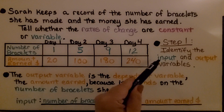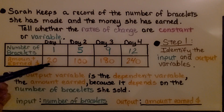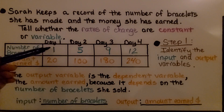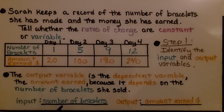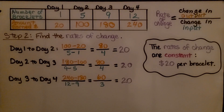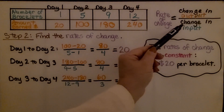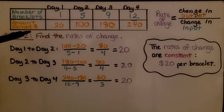The first thing we do is identify the input and output variables. The input is the number of bracelets she made — it's the independent variable controlling the dependent one. The output variable is the dependent variable, the amount earned, because it depends on the number of bracelets she sold. So our input is the number of bracelets, and the output is the amount earned.